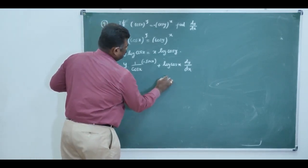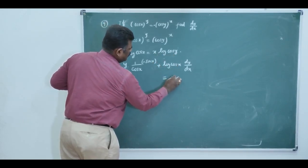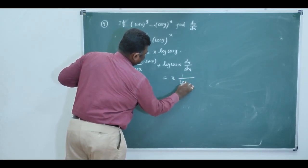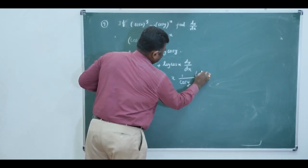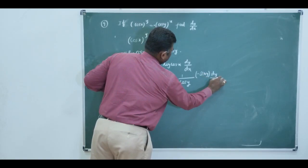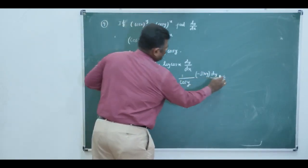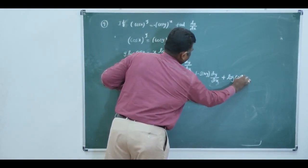And same as you are differentiating right side, again apply the U-V formula. So, we want x into log of cos y.